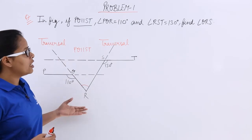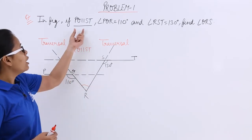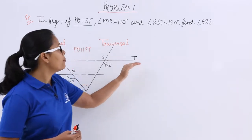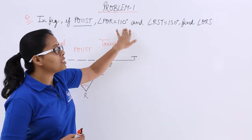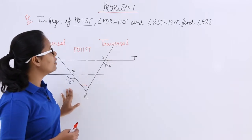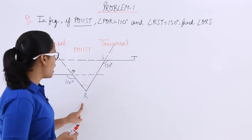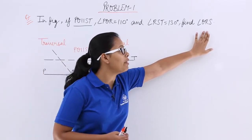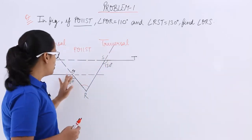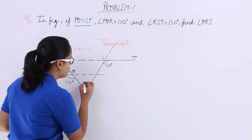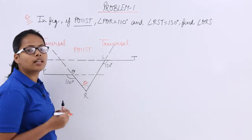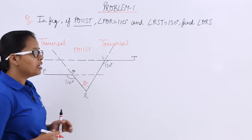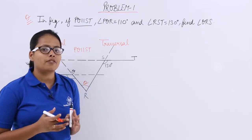Our problem says in this figure which I have drawn here, if PQ is parallel with ST. This is PQ which is in parallel with ST. And angle PQR, the given value for this is 110 — you can see here this is 110. And angle RST, the angle for this is 130 degrees. Then you need to find out the value for QRS, which you may say is theta. So you need to find out the value for this.